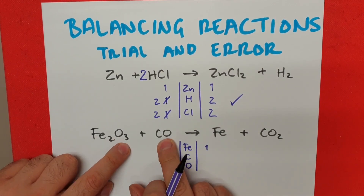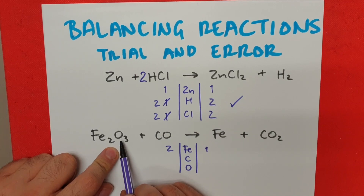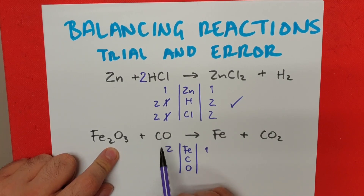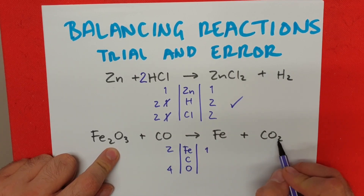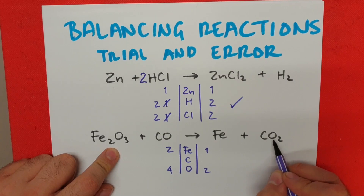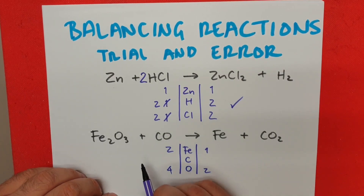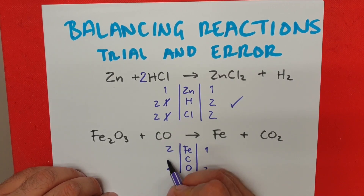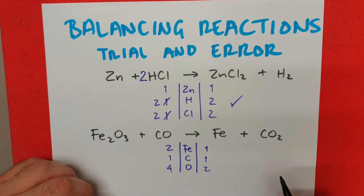We have four oxygen on the reactant side — counting one, two, three, and another one, so four. On the product side we have two from the subscript in carbon dioxide. And last but not least, we have one carbon atom on each side.